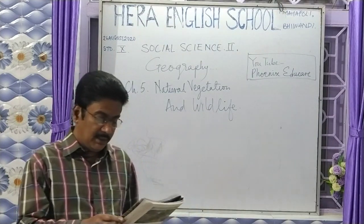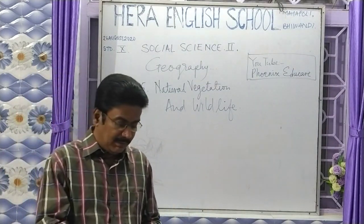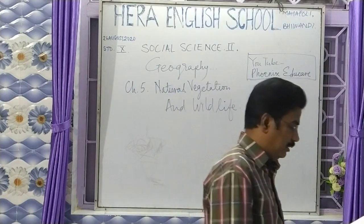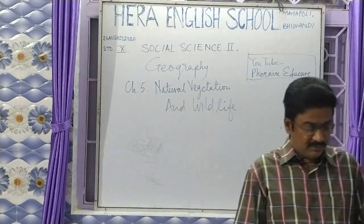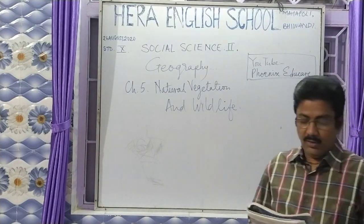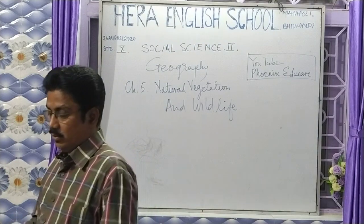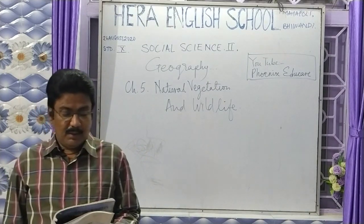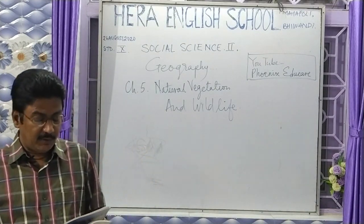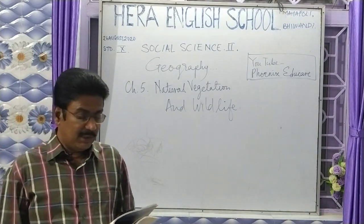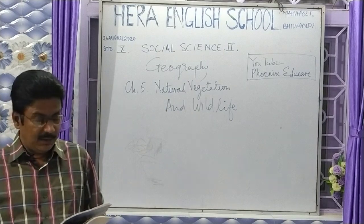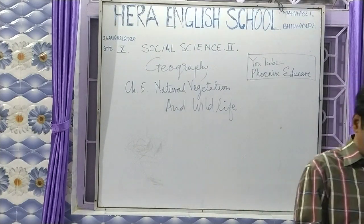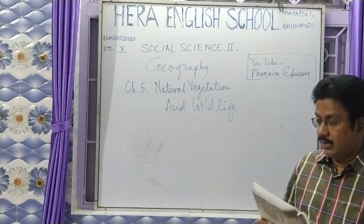Estuaries and lagoons are also found in many places along India's coastline, where the Bay of Bengal, the Arabian Sea, and the Indian Ocean are seen. Because of the various altitudes, three types of forest are found. At the highest altitudes, seasonal flowering trees are found. At medium altitude, coniferous trees like pine, deodar, and fir are found. At the foothills, mixed forests are found. That covers the whole of India's natural vegetation.